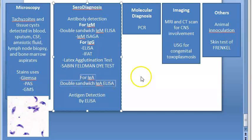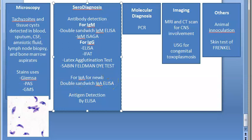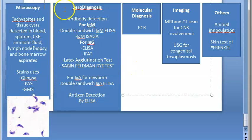For IgA in congenital cases, double sandwich IgA ELISA is used — the newborn would have received IgA from the mother. For antigen detection, ELISA is used. In AIDS and other immunocompromised patients, antigen detection is very useful. You can also detect antigen in amniotic fluid to diagnose congenital toxoplasmosis.